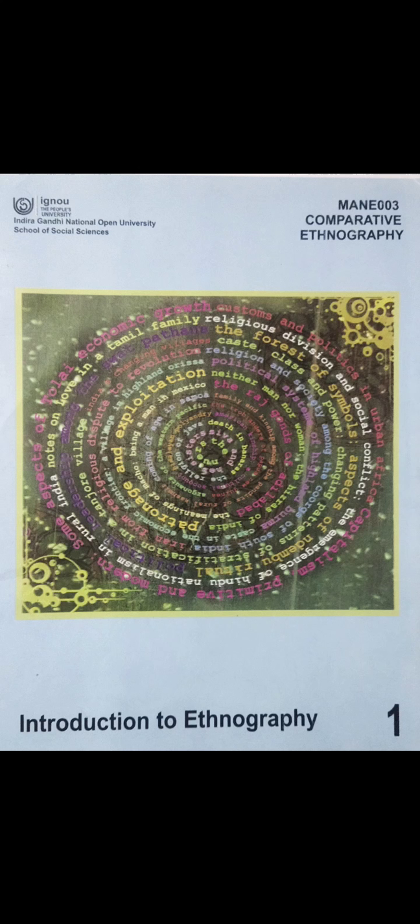An ethnographer is supposed to go beyond reporting events and details of experience, and attempt to explain how these represent webs of meanings, a phrase borrowed from Geertz (1973). As Bernard and Spencer (1996) suggest, the word ethnography has a double meaning: ethnography as product — that is, ethnographic writings — and ethnography as process — participant observation or fieldwork. The product depends upon the process but not in any simple relationship. In constructing ethnographies, anthropologists do more than merely writing up the field notes they record as part of doing fieldwork.